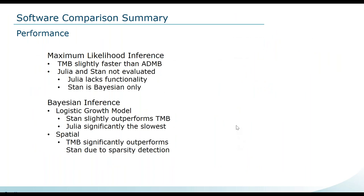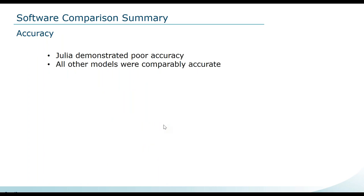In summary regarding performance and MLE inference: TMB performs slightly faster than ADMB. Julia lacked functionality for nonlinear mathematical models in MLE, and Stan was considered Bayesian-only. For Bayesian inference on the logistic growth model, Stan slightly outperformed TMB; Julia was significantly slower. For the spatial model, TMB was significantly faster than Stan due to sparsity detection. Regarding accuracy, Julia had poor parameter estimate accuracy; all other approaches were very accurate and improved with sample size.